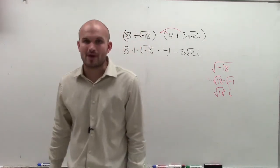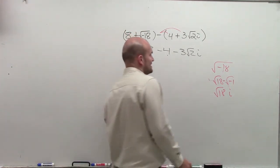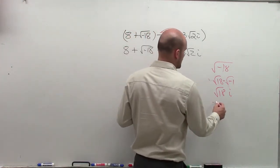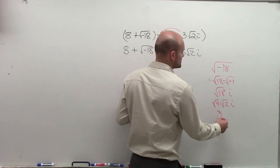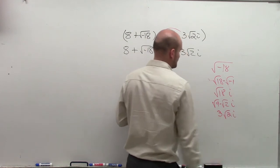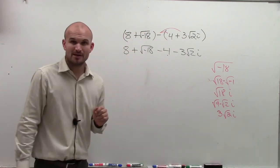Then I need to simplify my radical. So I can break up 18 again into square root of 9 times the square root of 2 times i. Square root of 9 is 3, radical 2i. Follow me? Good.